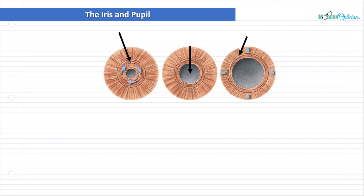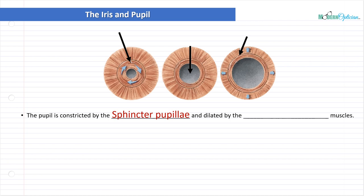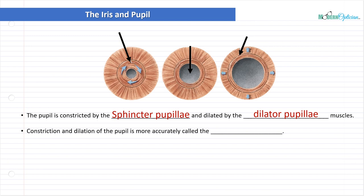Looking at pictures of irises straight on, the pupil at the center is constricted by the sphincter pupillae and dilated by the dilator pupillae muscles — two muscles working hand in hand to open and close the pupil opening. Constriction and dilation of the pupil is more accurately called the pupillary reflex. Unlike voluntary muscle contractions, such as closing your hand, the pupillary reflex is completely subconscious — it is an involuntary muscle contraction. Your brain activates these muscles based on lighting conditions; you cannot constrict the pupil by thinking about it. This is a reflex — a neurological process.